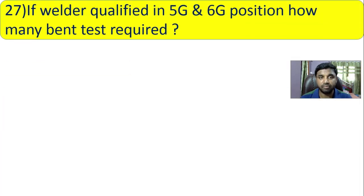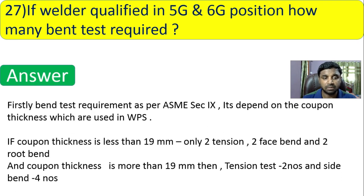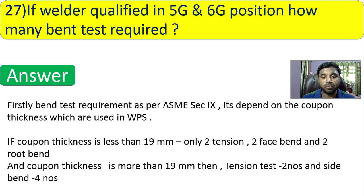Question 27: if a welder is qualified in 5G and 6G positions, how many bend tests are required? This is a tricky question. As per ASME Section 9, it depends on coupon thickness used in the WPS. If the coupon thickness is less than 19 mm, two tension tests and four side bend tests are required.